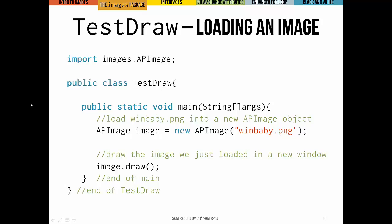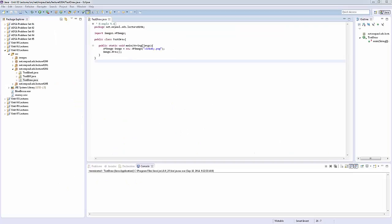Then we make a new class called TestDraw. We have a main method. Inside that main method, we instantiate and declare a new APImage object — the input it takes when we create the new object is a file name, assumed to be in the working directory. Here we're loading up the file winbaby.png. Then we draw that image object by calling image.draw, and we'll see that that'll trigger the actual window for us to see the image.